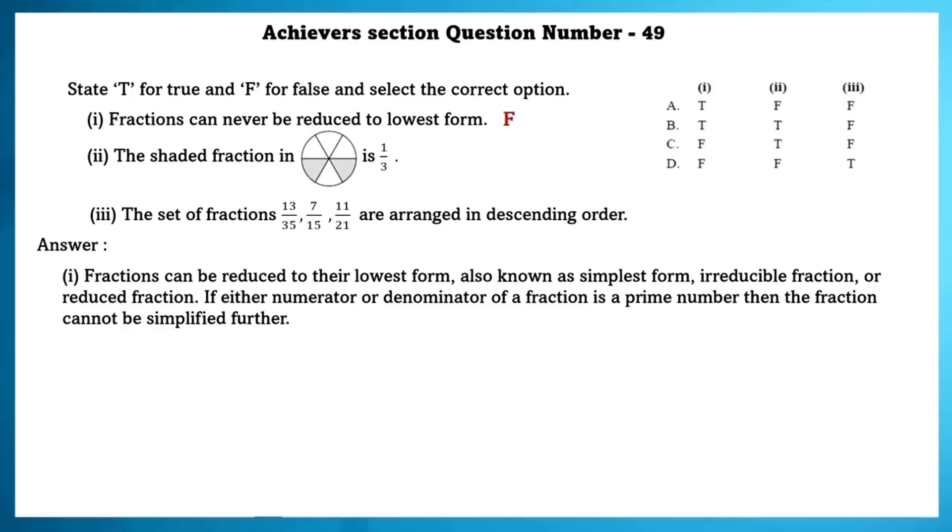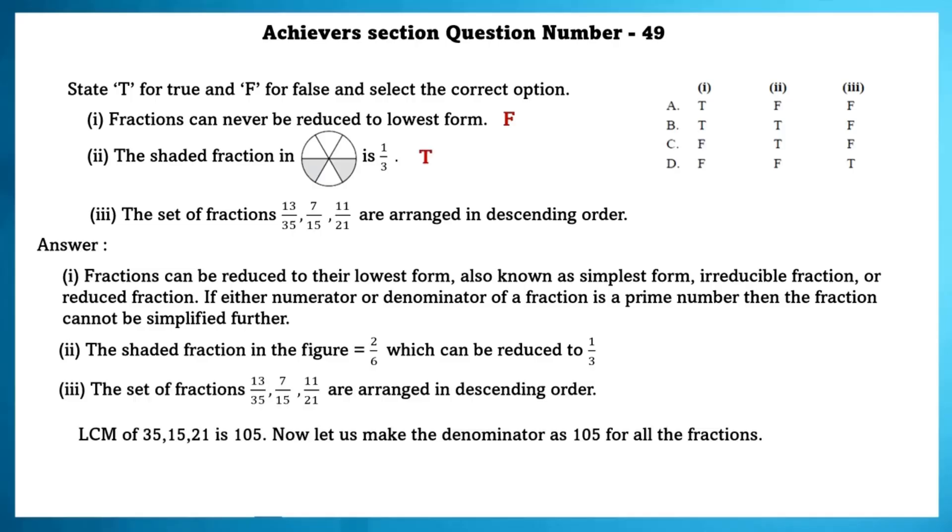Second one, the shaded fraction in this figure is 1 by 3. Yes, the shaded fraction in the figure is actually 2 by 6 which can be reduced to 1 by 3. Third one, the set of fractions 13 by 35, 7 by 15 and 11 by 21 are arranged in descending order. LCM of these numbers is 105. Now, let's make the denominator as 105 for all the fractions. As we can see here, the fractions are arranged in ascending order, not descending order. So, this is false.